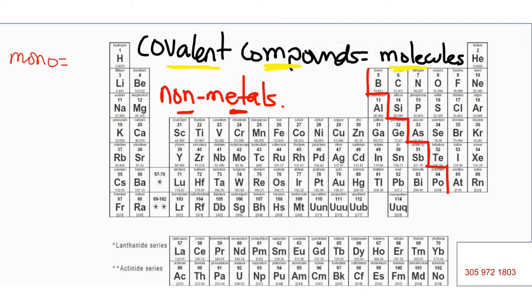We use the prefix mono, that means one. The prefix di, that means two. The prefix tri, three. Tetra will be four. Penta will be five.